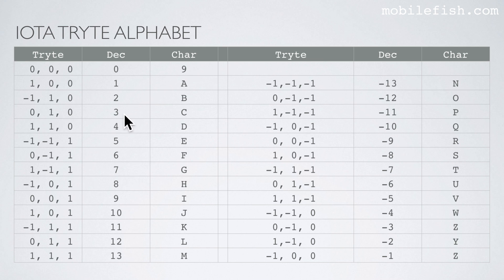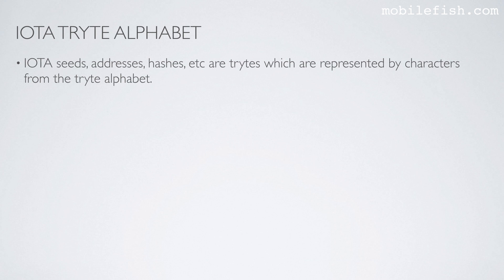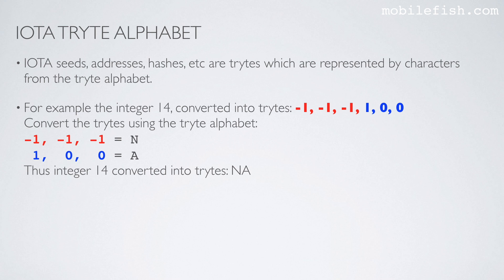Here are the positive values from 1 to 13, and here are the negative values from minus 1 to minus 13, all balanced around the value 0. IOTA seeds, addresses, hashes, etc. are trytes which are represented by characters from the tryte alphabet. For example, the integer 14 converted into trytes looks like this, as we have seen earlier. When we convert these two trytes using the tryte alphabet, you will get the characters N and A. Thus, integer 14 converted into trytes looks like this.